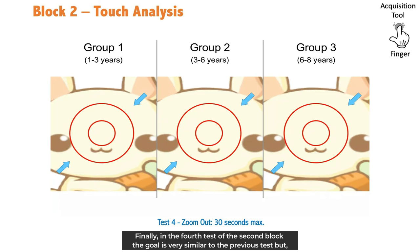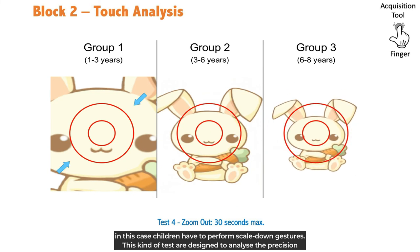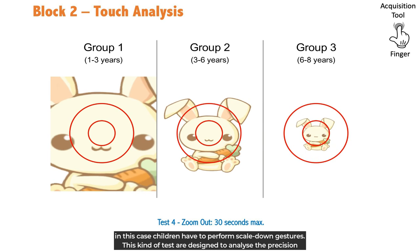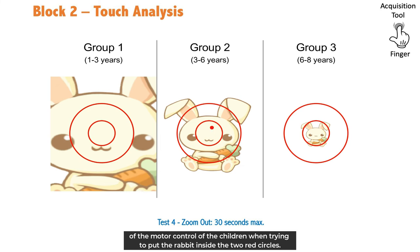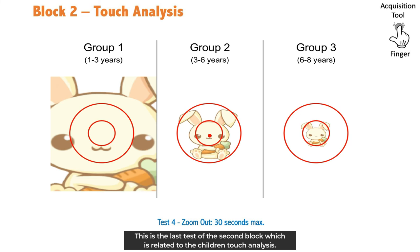Finally, in the fourth test of the second block, the goal is very similar to the previous test but in this case children have to perform scale-down gestures. This kind of test is designed to analyze the precision of the motor control of the children when trying to put the rabbit inside the two red circles. This is the last test of the second block, which is related to the children touch analysis.